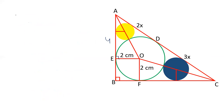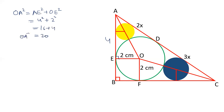Since OE is perpendicular to AE, applying Pythagoras theorem: OA² = AE² + OE² = 4² + 2² = 16 + 4 = 20. Therefore OA = √20 = 2√5. So the length OA is 2√5.